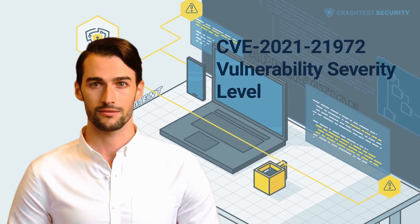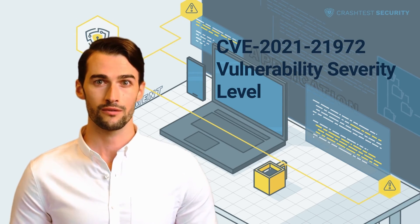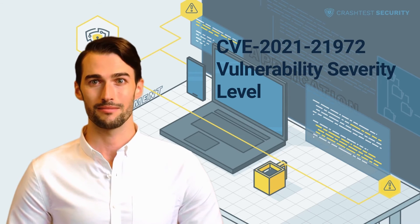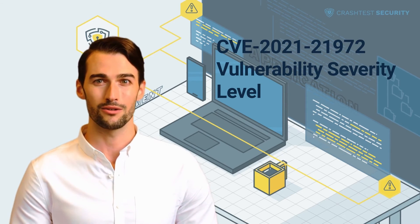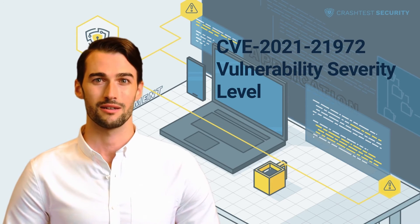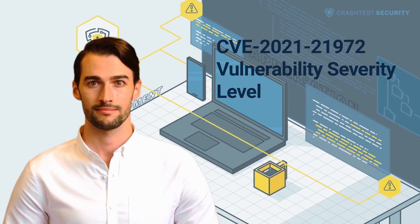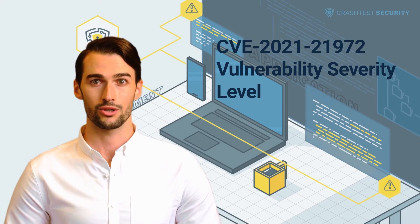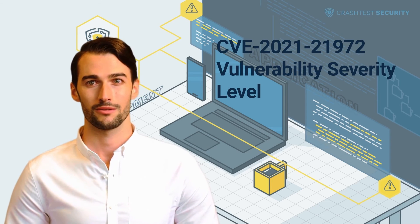Ransomware attacks: the CVE-2021-21972 vulnerability can also be exploited to obtain administrative privileges and seize vCenter Server systems. This is usually followed up by demanding compensation to restore server functionalities or decrypt data. Data breach involves a remote attacker injecting commands to obtain sensitive data from vulnerable systems. Such targeted attacks aim to obtain and leak sensitive client or application data to third parties, including competitors or malicious actors.